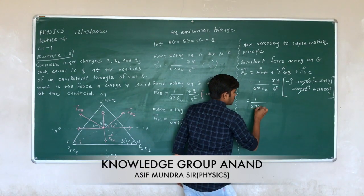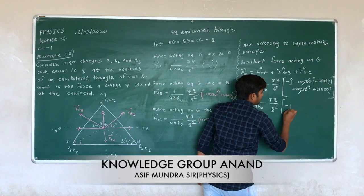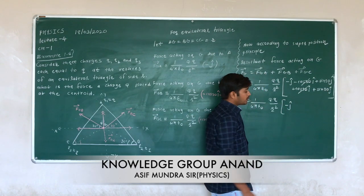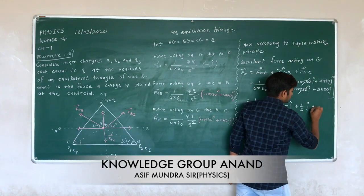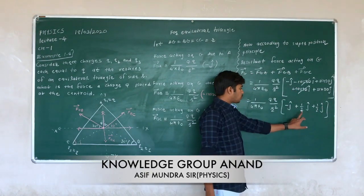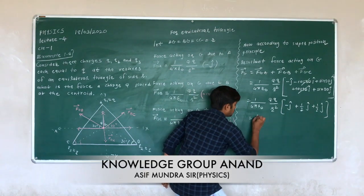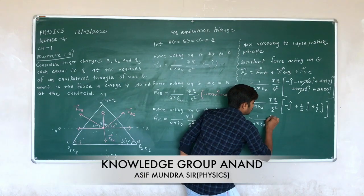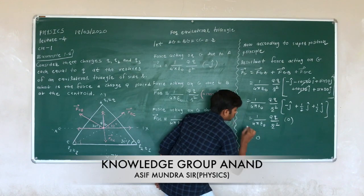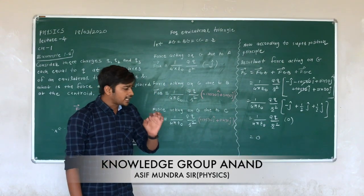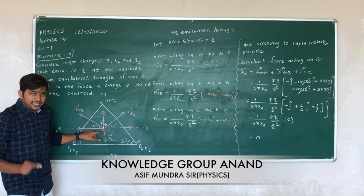So the resultant equals (1/4πε₀)(Q²/R²) times [−1 + sin30° + sin30°] ĵ = (1/4πε₀)(Q²/R²) times [−1 + 1/2 + 1/2] ĵ = (1/4πε₀)(Q²/R²) × 0 = 0. The resultant force acting on the charge placed at the center is zero.